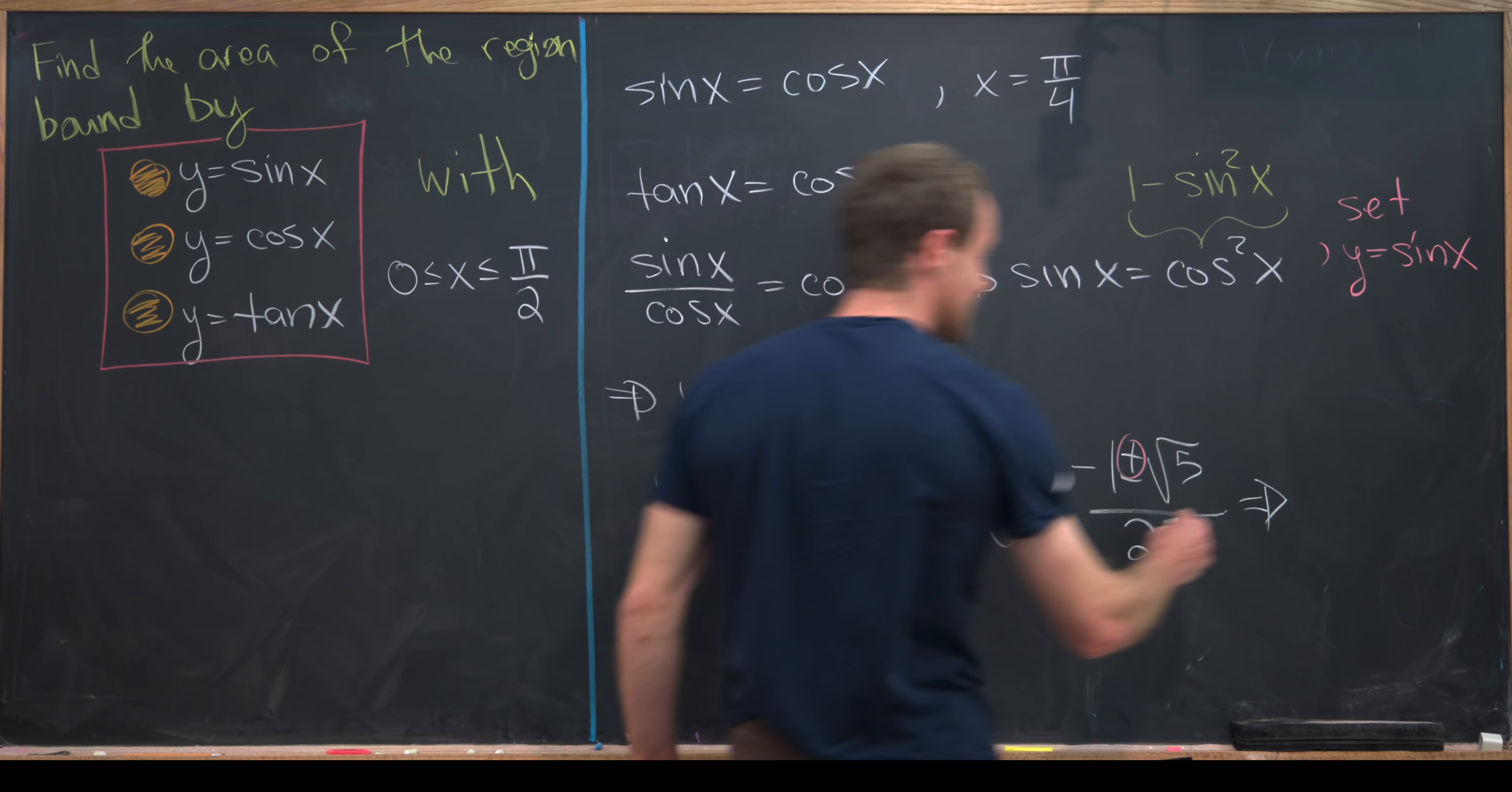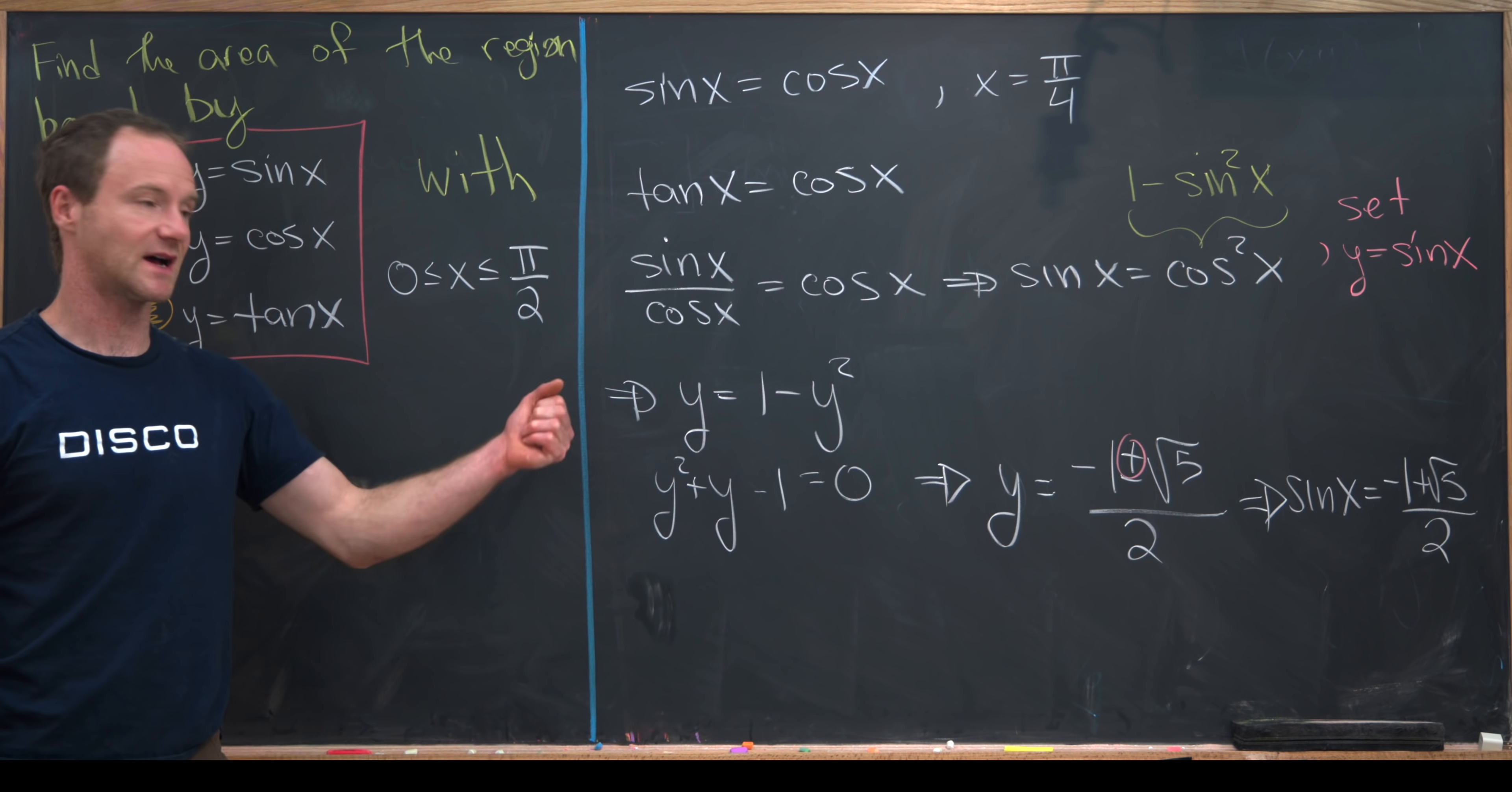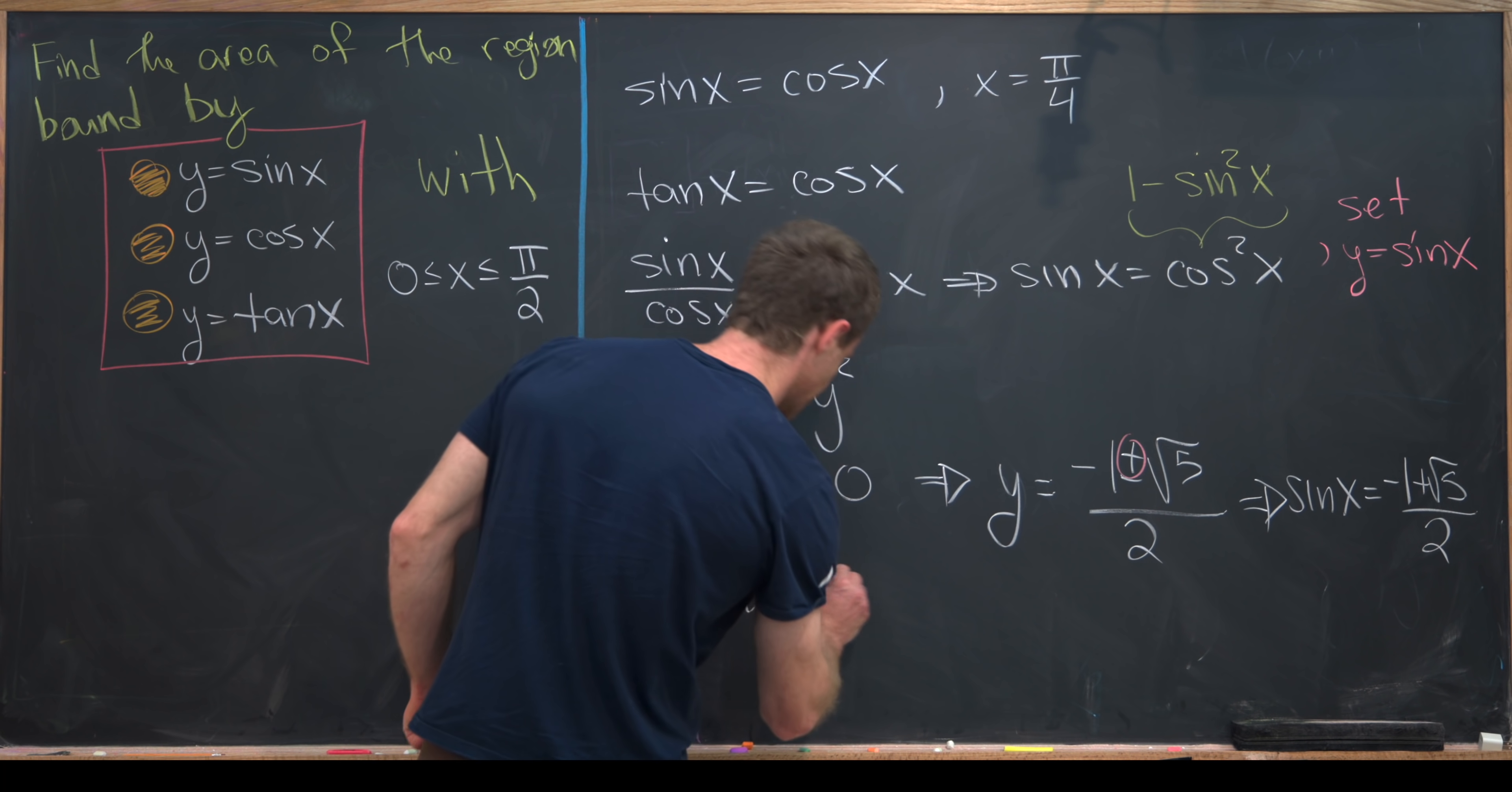So that means we take the plus sign, which means we have sine of x equal negative 1 plus the square root of 5 over 2. Now we need to solve that for x, but there's not a nice angle where sine is equal to that value.